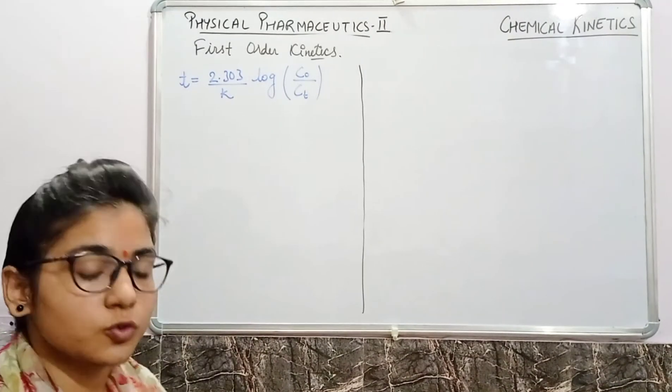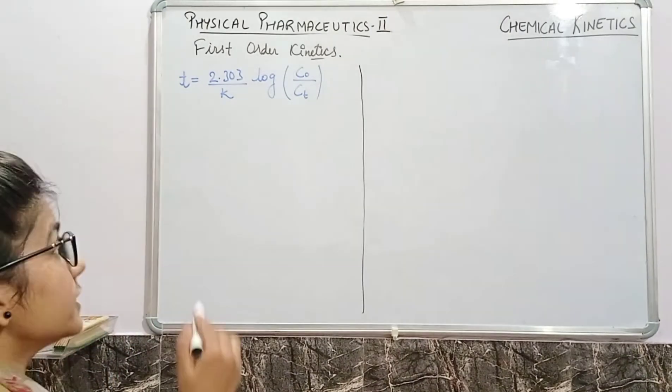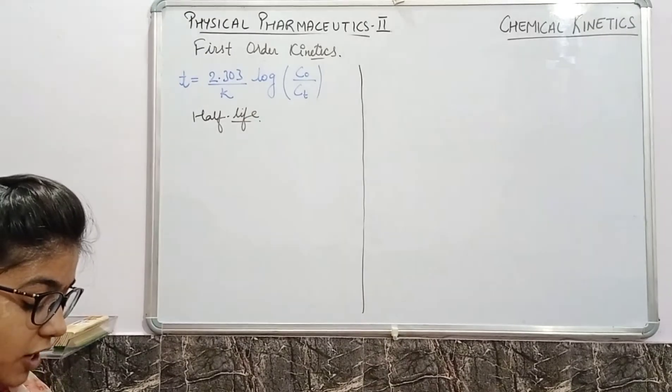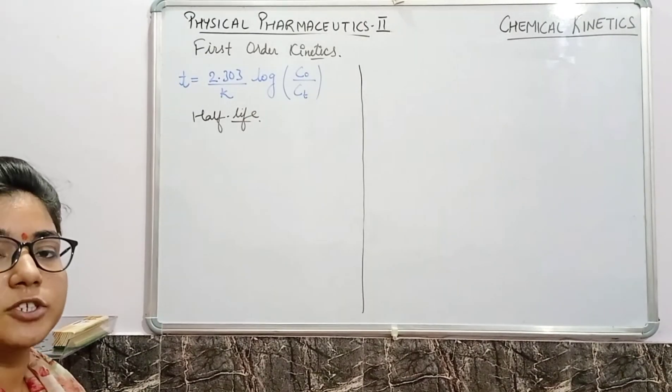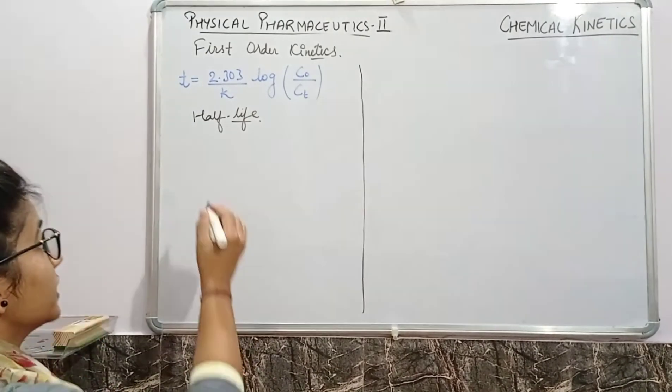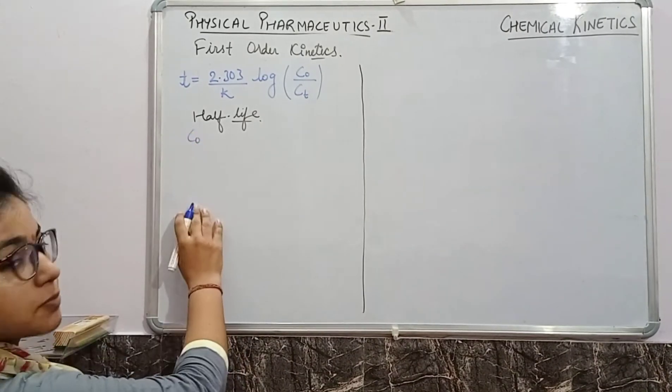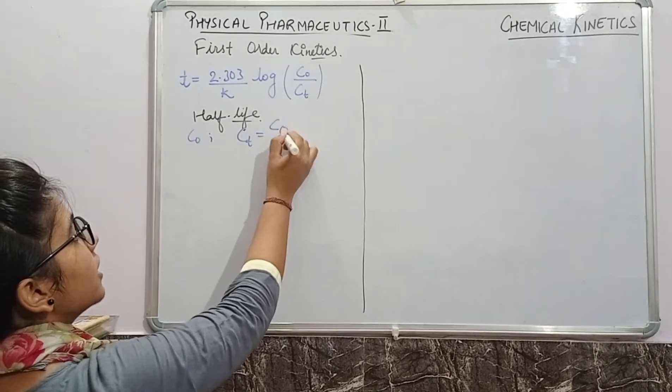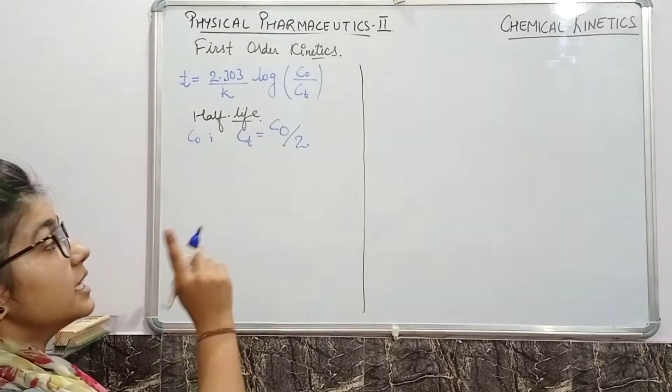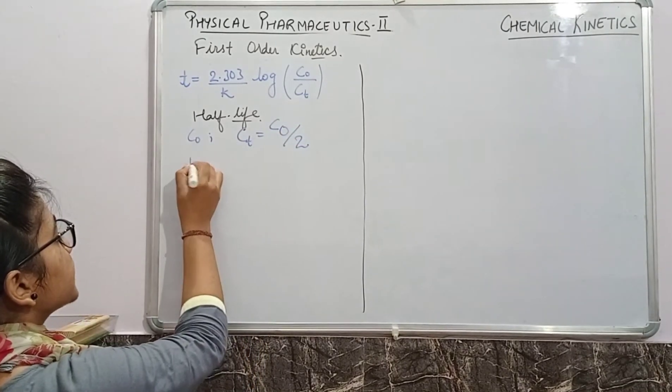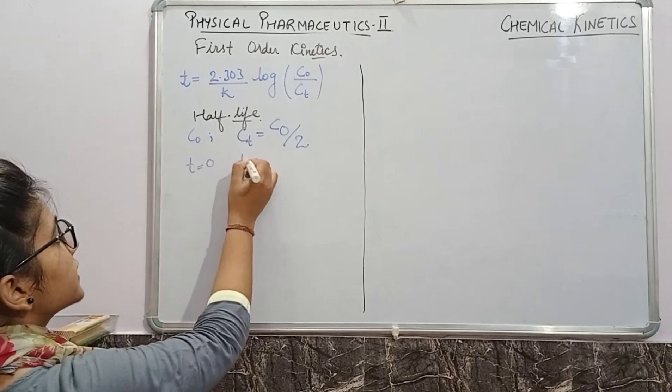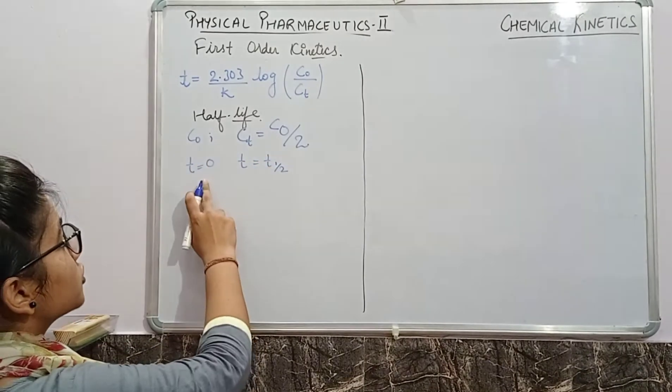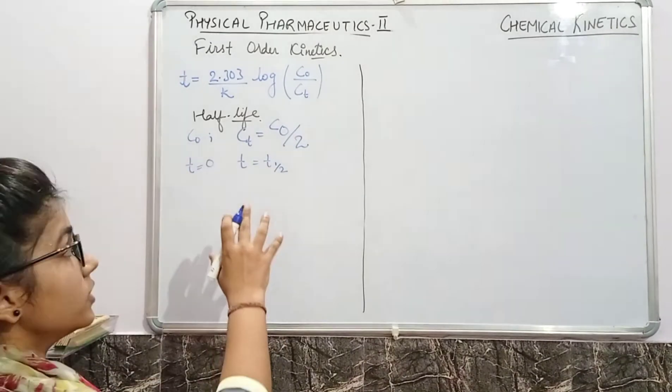Now let's start about the half life. We have to calculate its half life. As we all know, half life is where your initial concentration c0 becomes c0/2, and initial time is 0 and final time is t half.